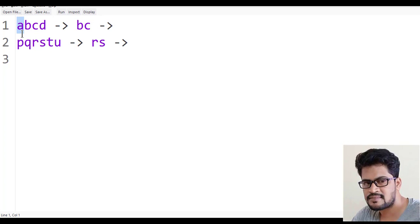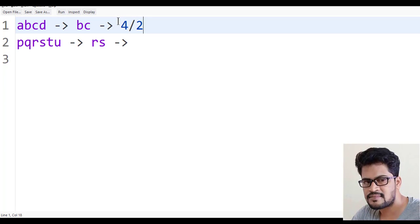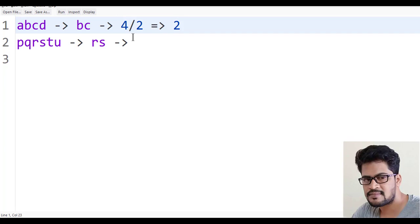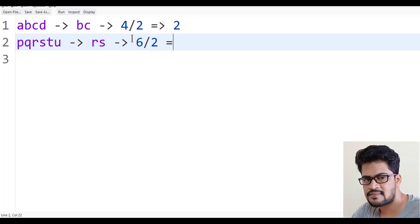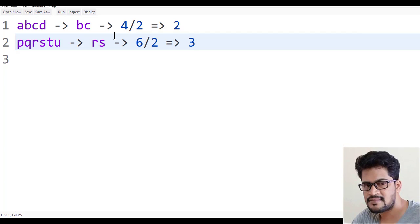First character has to be removed. Here in this, two characters have to be removed. First let's see the length of it. Length is 4. If I say 4 by 2, it is 2. Here 6 by 2, it is 3.